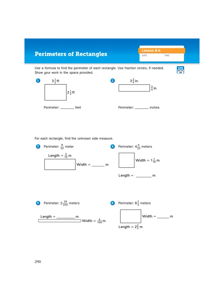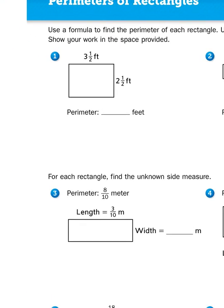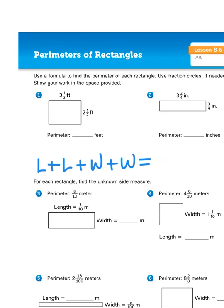Okay, well rectangles have four sides, and so the formula for perimeter would be adding the four sides together. So it would be length plus length plus width plus width equals perimeter. That's the formula.